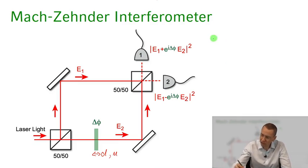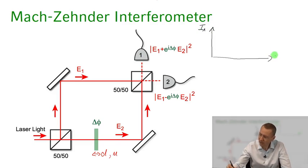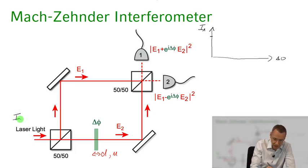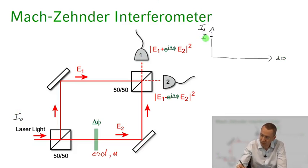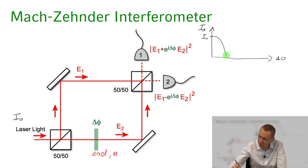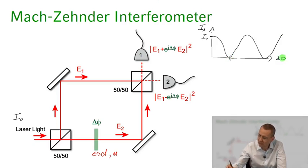If we now plot the output intensity I1 as a function of delta phi, with incoming intensity I0: when delta phi is 0 we have constructive interference and all the light comes out on detector one. As we vary delta phi we go to destructive interference at delta phi = π, constructive again at 2π, destructive at 3π, and so on.